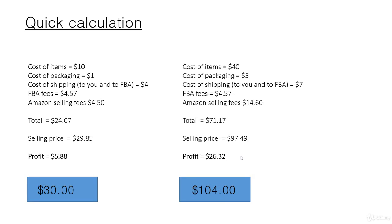Here are two bundles at opposite ends of the scale. We've got a very low-cost bundle where the cost of items was only $10, and a higher-cost bundle where the cost of items were $40. You can see the significant difference in the profit margins here. When you are selling higher-value, higher-priced items, you also need to reflect that with the packaging. That's why I've got the cost of packaging at $5 here, whereas for the low-cost bundle I've only got the cost of packaging as $1 — probably just a poly bag, neatly tied together.